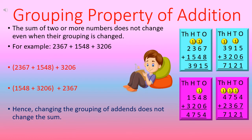Now let's change the grouping. We make a group of 1,548 and 3,206 and add them first, getting 4,754. Then we add the third addend, 2,367, to 4,754 and again get 7,121. So we can see that even after changing the grouping of the addends, our sum remains the same — our answer remains the same.